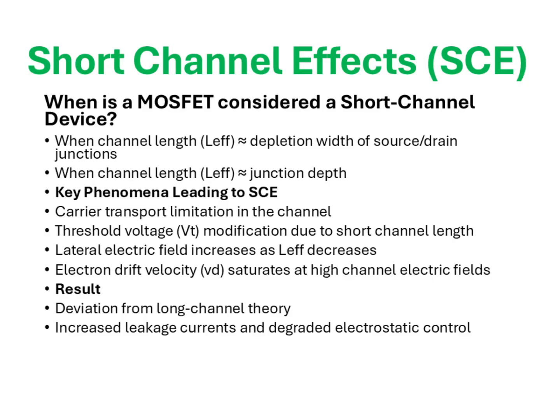The first is the limitation on carrier transport. As the channel becomes extremely short, the lateral electric field rises sharply. With this strong field, the drift velocity of carriers no longer increases linearly with the field — instead, it tends to saturate, reducing carrier mobility and current driving capability. The second important phenomenon is the modification of the threshold voltage. In short channel MOSFETs, the gate loses part of its control over the channel charge because the influence of source and drain depletion regions becomes significant, resulting in a reduction of threshold voltage as channel length is reduced, which impacts device reliability and increases susceptibility to leakage currents.